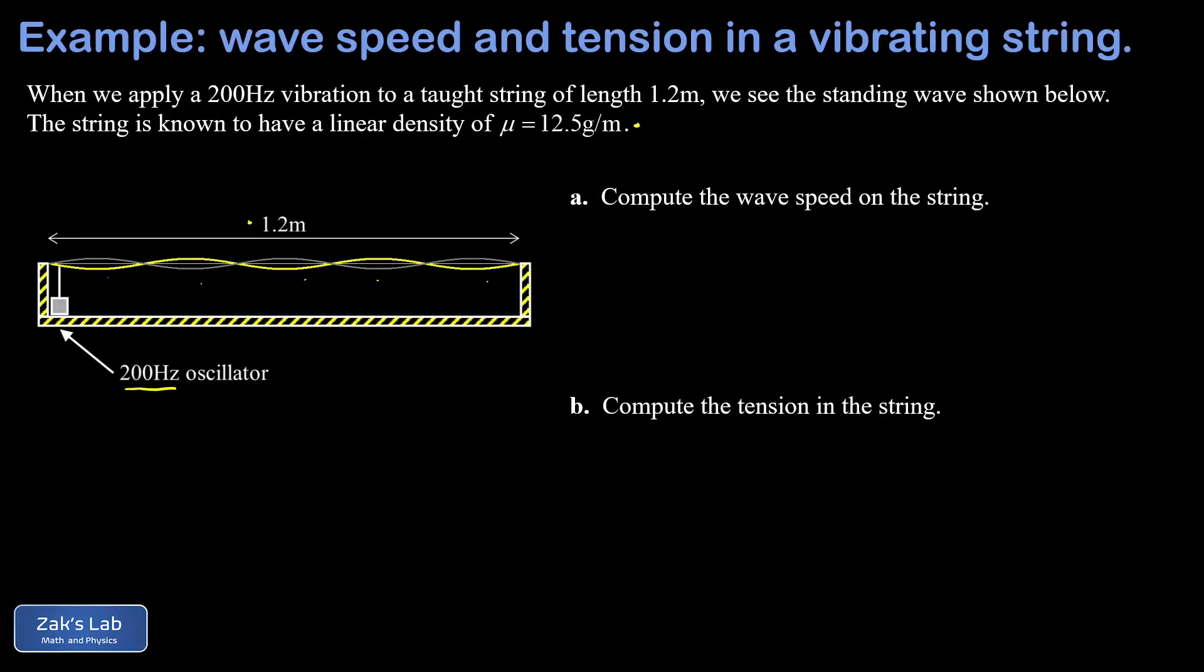Now to get the wave speed, what we're planning to do here is use the wave speed formula v equals f lambda, and I'll post a link to the video where that was first introduced. So what we need is the frequency of oscillation for the wave and the wavelength.